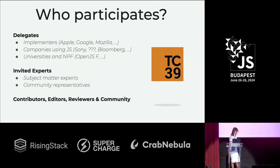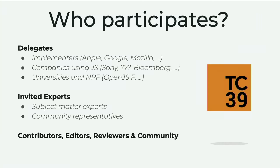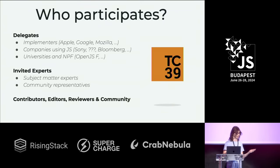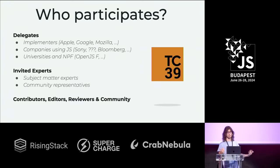Who are those anonymous people that decide what's the best language for all of us? Well, there are companies that implement the language, like browser developers at Apple, Google, and Mozilla, who have to implement the features and make sure they can be implemented in a performant way without introducing bugs in browsers. There are companies using JavaScript like Sony, Bloomberg, and many others — they want to make sure the language is what's best for their developers. And then there are universities and nonprofit organizations like the OpenJS Foundation, where Node.js belongs, or even Mozilla which is a nonprofit.